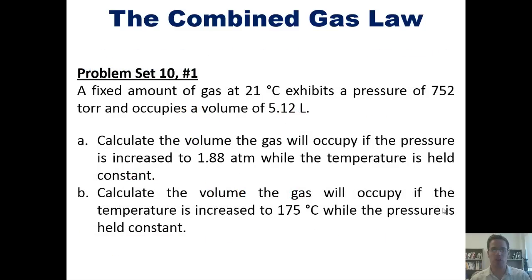A fixed amount of gas at 21°C exhibits a pressure of 752 torr and occupies a volume of 5.12 liters. Calculate the volume the gas will occupy if the pressure is changed to 1.88 atm, while the temperature is held constant. And then calculate the volume the gas will occupy if the temperature is increased to 175, while the pressure is held constant.